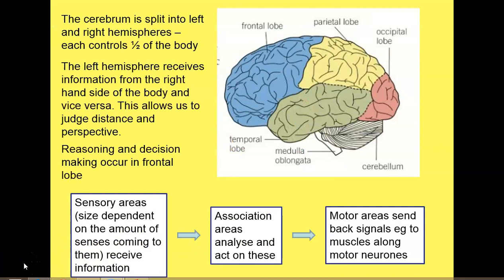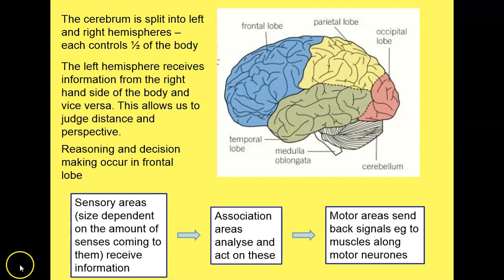The cerebrum is split into two halves — the left and right hemispheres — and each one controls half of the body. There's a crossover at the top of the spinal cord, so the left side of the body is controlled by the right hemisphere and the right side is controlled by the left hemisphere.